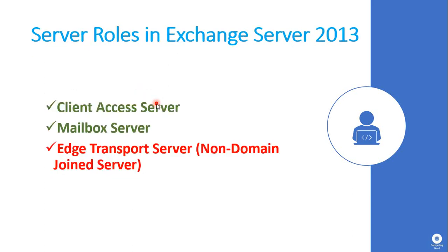In Exchange Server 2013, these three server roles can be installed. The Client Access Server role and the Mailbox Server role can be installed on two different Windows servers or on a single Windows server. The Edge Transport Server role is always installed on a single Windows server and is installed on a non-domain-joined machine.